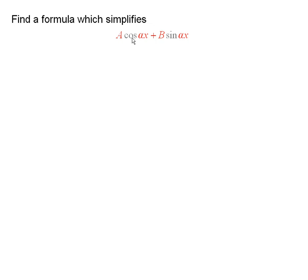We're going to simplify this expression. Now, in order to do this, we're going to multiply and divide by the square root of a squared plus b squared.